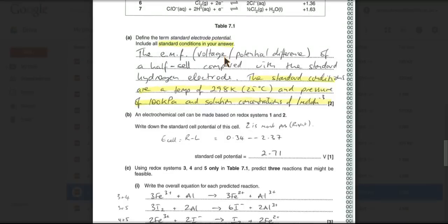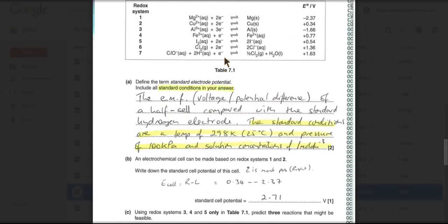3, 4 and 5 only. So 3 and 5 now. So we've got minus 1.66 versus plus 1.54. So again, this is more positive than this one. So we'll check the electrons. We've got 2 in that one and 5 and 3 and 3. So we're going to need to treble this one and double this one. So it'll be 3 of those plus 2 of those gives 6 of those and 2 of those.